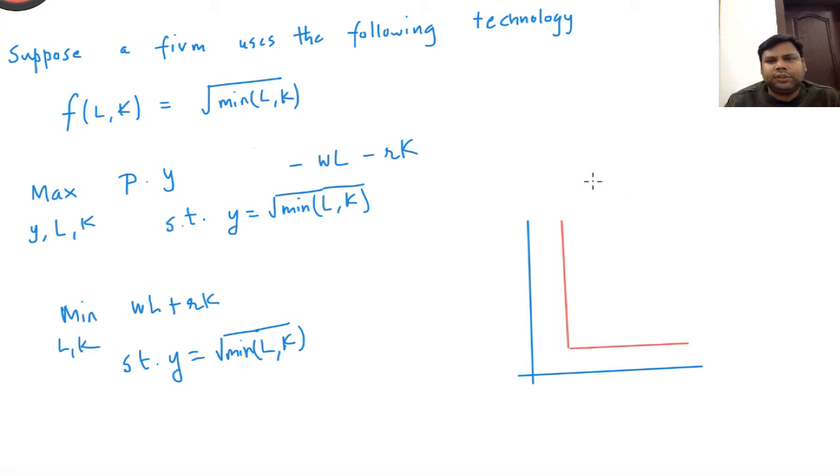This is the iso-quant corresponding to Y level of output. So the objective is to choose a point on this iso-quant that minimizes the cost. Here it's simple. When we plot iso-cost curves they are going to look like this with slope W by R, and this is the lowest possible iso-cost curve that passes through the iso-quant.